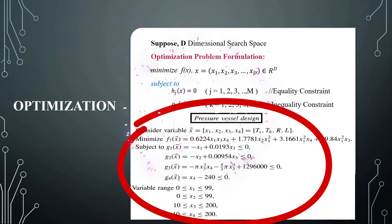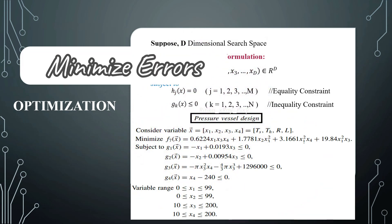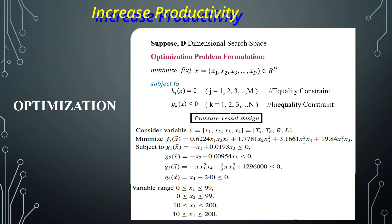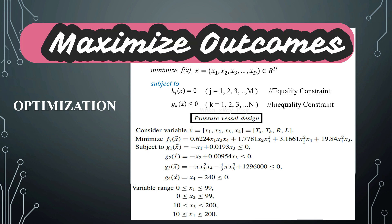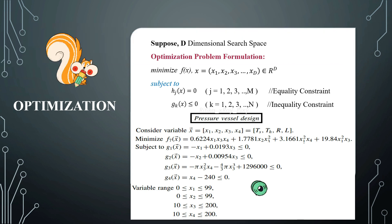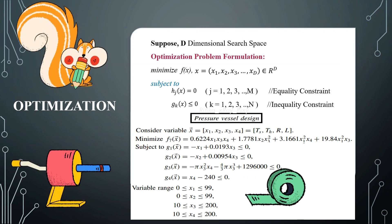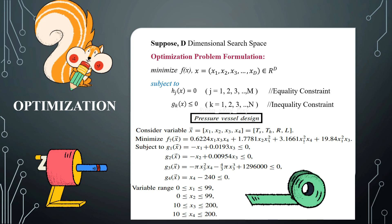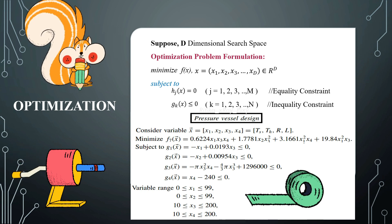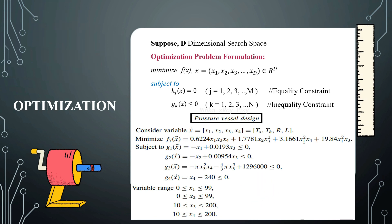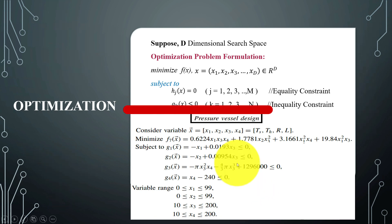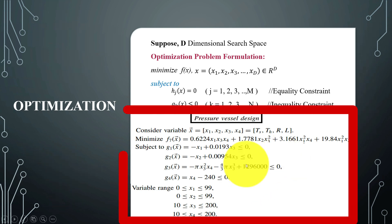First, we will understand optimization problems. Optimization is used to minimize errors, reduce cost, and increase productivity, or we can use it to maximize desired outcomes. Today, optimization is used in different fields including engineering, science, management, mathematics, finance, medical, and others.